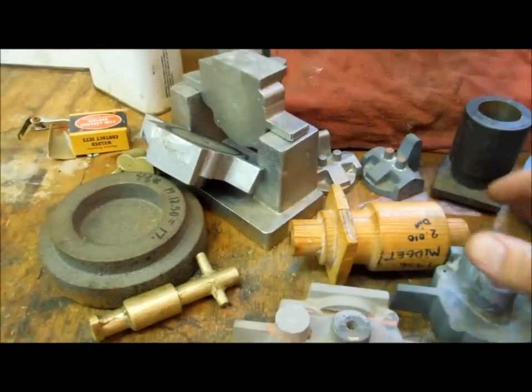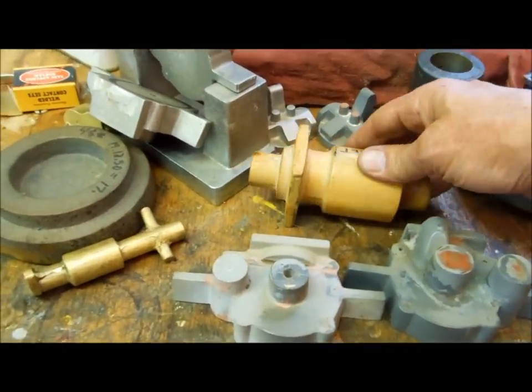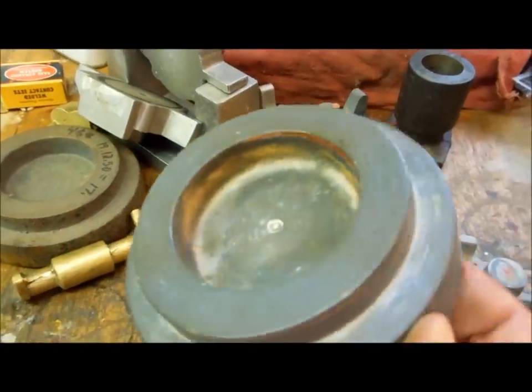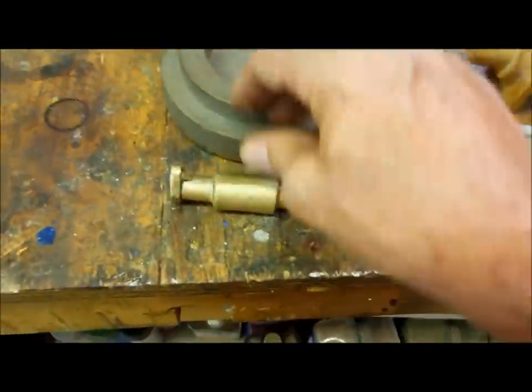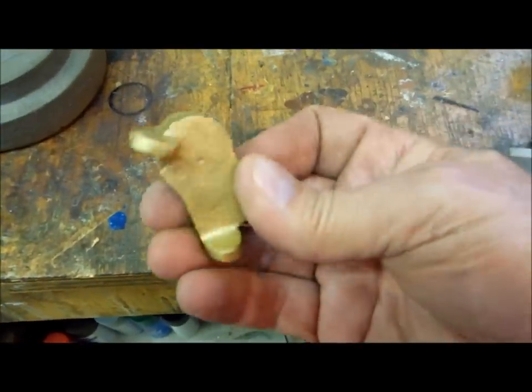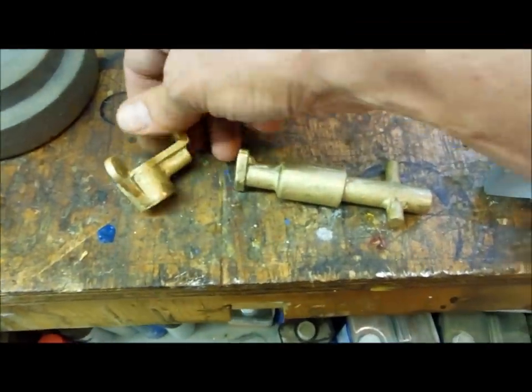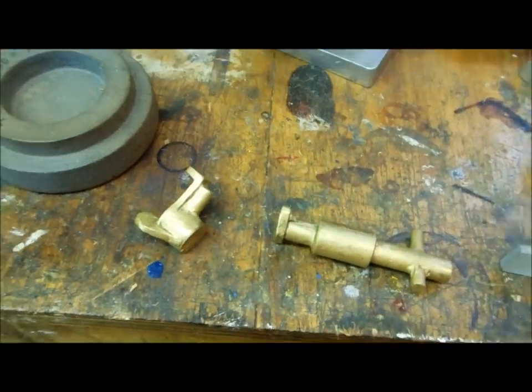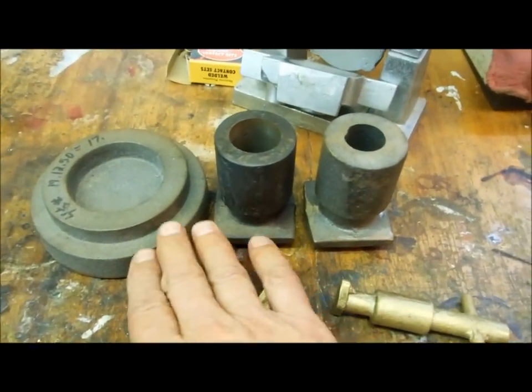So patterns for the crankcase, cylinders, flywheel, intake, and the timing points holder. I cast those out of brass. The cylinder head, cylinder, and flywheel are cast out of cast iron.